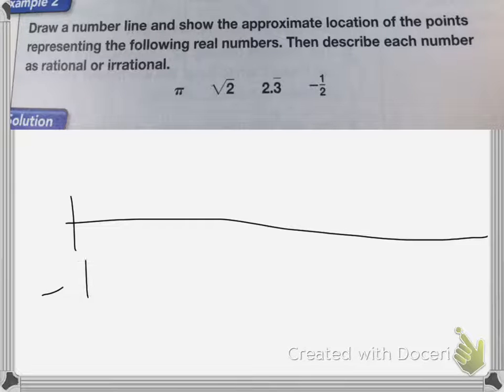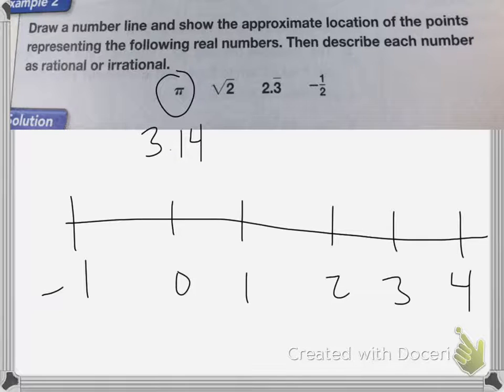We had negative 1, 0, 1, 2, 3, and 4. Well pi we know is 3.14 and then it keeps going. So that's going to end up somewhere around here. So this is going to be about where pi would be.